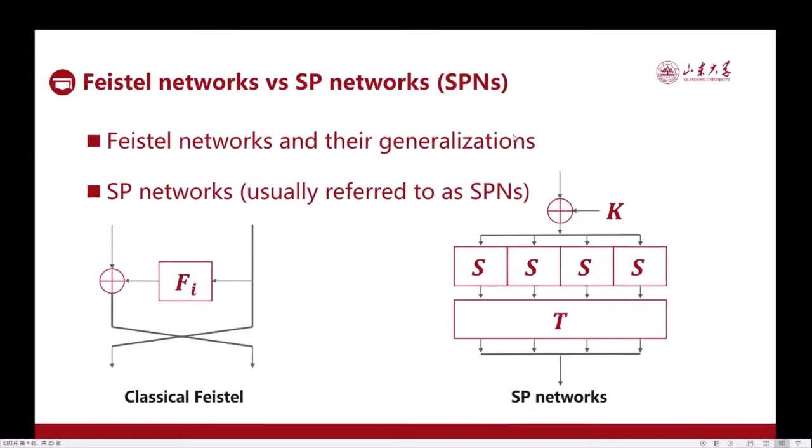Consider the problem of designing a block cipher. We have two famous approaches. The first is the Feistel network and its generalizations. In every round of such structures, only a part of the intermediate state will go through the nonlinear round function, and this part is kept in the output. A notable instance is the Data Encryption Standard.